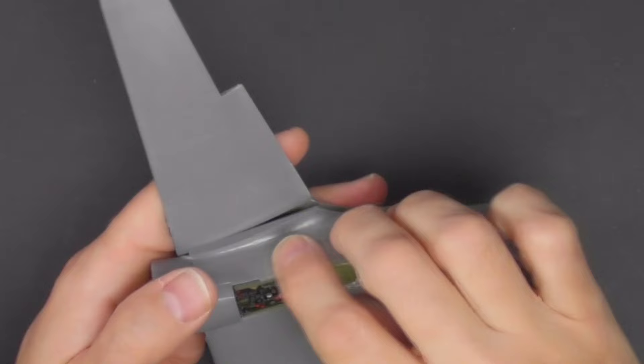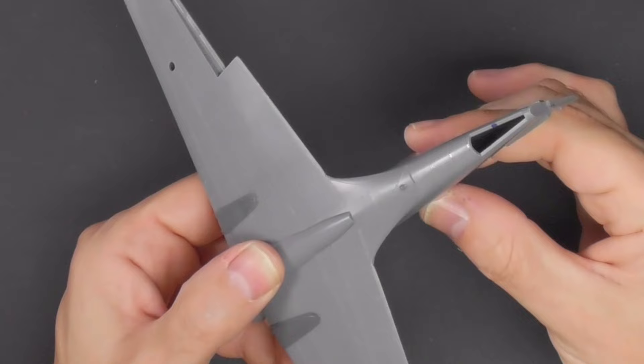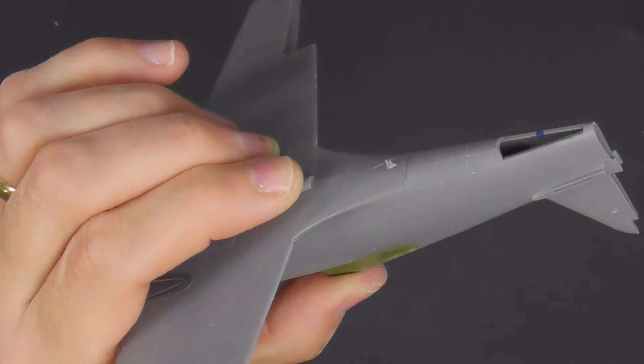This is always the main event in any model airplane kit—the wing to fuselage mating. As you will see, the fit is absolutely superb. Kudos to Clear Prop—that is just a dry fit and it's just brilliant. Obviously I am going to glue it, but it doesn't need much at all.